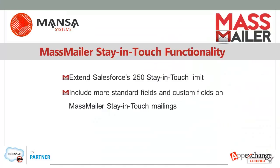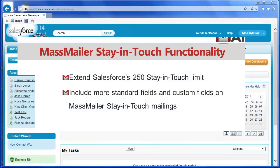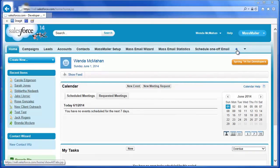MassMailer eliminates Salesforce stay-in-touch limits of 250 requests and lets you send unlimited requests. MassMailer also extends the fields that you can include on your stay-in-touch requests to more standard fields as well as custom fields. Go to the MassMailer Stay-in-Touch tab to send stay-in-touch requests.